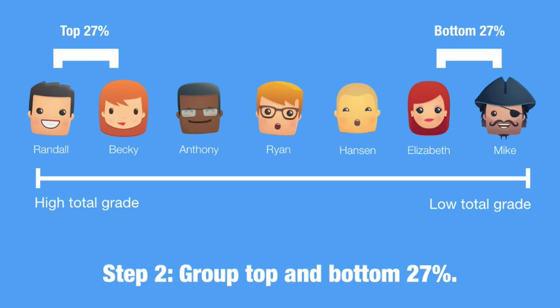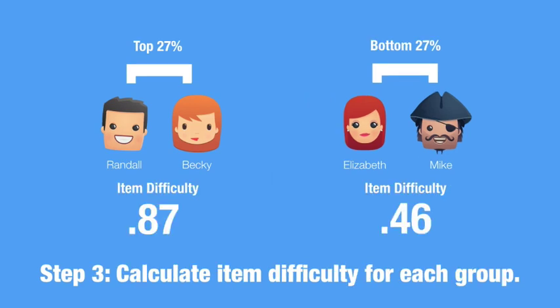Next, we group the top 27% and call them high performers. Then we group the bottom 27% and call them low performers. Why 27%? I don't know — some person significantly smarter than me decided that was a good number. Now, you might not be able to hit 27% exactly, but let's aim for that number if we can. Then, for each question, we calculate the item difficulty for each group using only the students in that group. Remember how to do this from the last video? It's the number in each group who answered it correctly over the total number in the group.